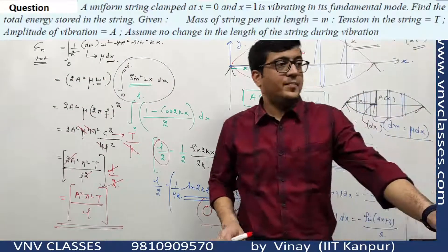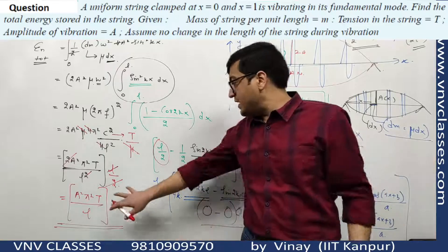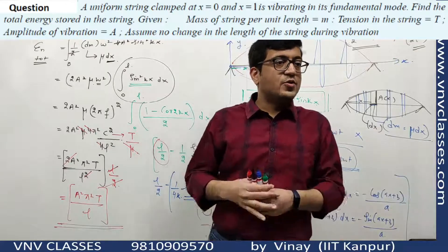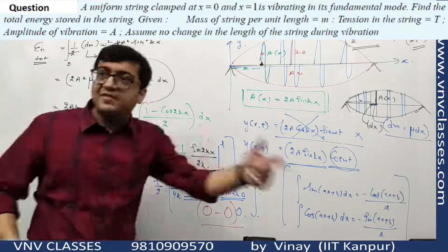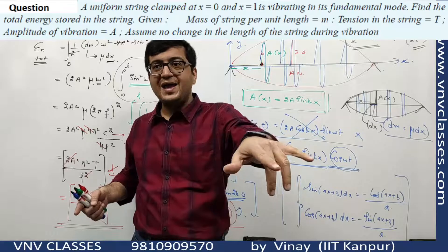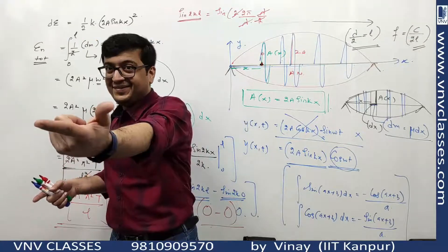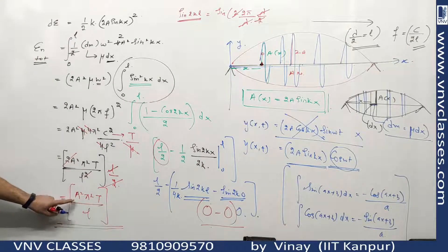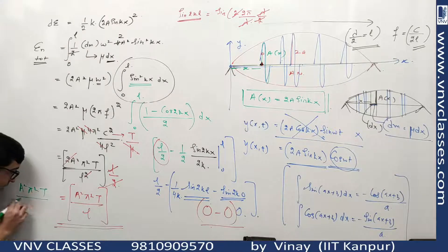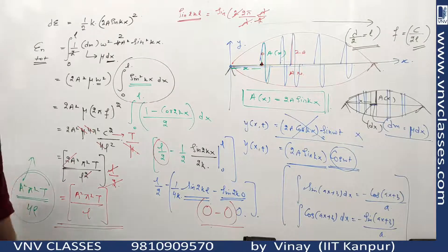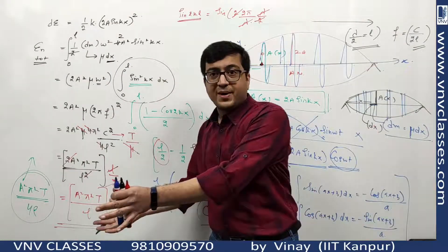The book's answer has 1/4 in the denominator, written as A²π²T/(4L). That's because I assumed 'a' as the traveling wave amplitude, making the standing wave antinode amplitude 2a. But the question uses 'A' as the standing wave amplitude. So replace a with A/2: (A/2)²π²T/L = A²π²T/(4L). The amplitude 'A' here is the standing wave amplitude, not the traveling wave amplitude.